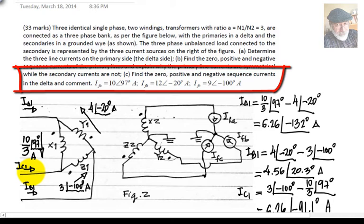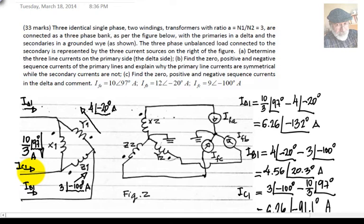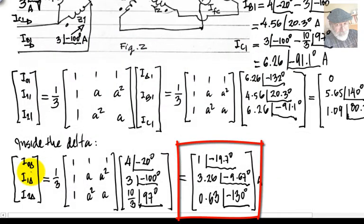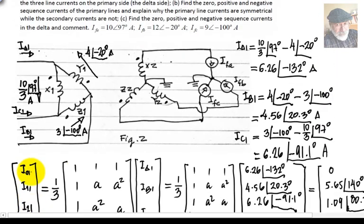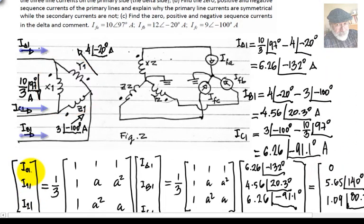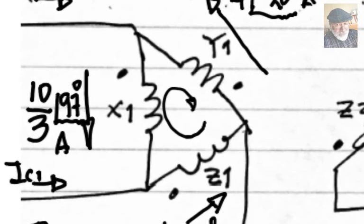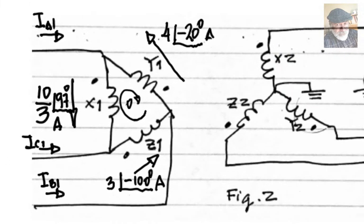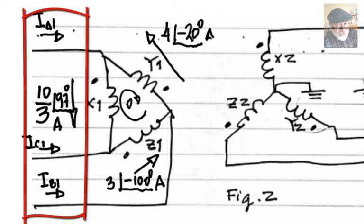In Part C, find the zero, positive, and negative sequence currents inside the delta. You can see those three currents in the delta. Apply the phase-to-sequence conversion to those to obtain the zero sequence, positive sequence, and negative sequence inside the delta. What happens is that there are zero-sequence currents — one amp — inside the delta, but no zero-sequence current in the line. The reason is that the zero-sequence current circulates inside the delta but never leaves it. So there are no zero-sequence currents in the lines connected to a delta winding of a transformer.